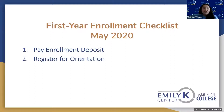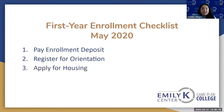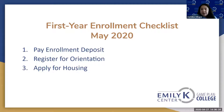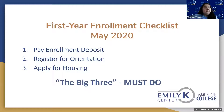The second step is to register for orientation. Typically at orientation you register for classes, so that's why it's important. The third step is to apply for housing. These all happen in May. These are the big three: confirm that you're showing up, confirm that you have classes registered, and confirm that you have a place to live so you're set up to walk onto campus in the fall. You must do all three to confirm you are set up for fall.